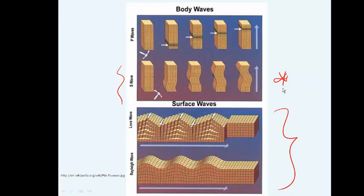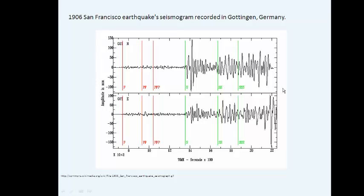You can also see in the graphic on your handout that P waves actually travel all the way down through into the inner core, whereas S waves are limited to the mantle and not the outer core, but they do show up in the inner core. This is the seismogram taken of the 1906 San Francisco earthquake as recorded in Germany. Even that far away, you can pick up vibrations in the earth. This was a really big earthquake — it caused a lot of damage and fires. This is called a seismogram, and it's recorded by an instrument called a seismograph.